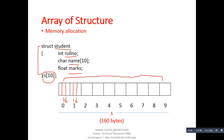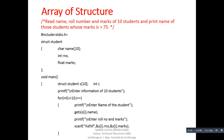So in total we have 10 blocks to store roll number, name, and marks of 10 students individually. If we calculate the total size of this array of structure, it will be 160 bytes, because we are occupying 16 bytes to store information of each student — 16 multiplied by 10 equals 160 bytes.